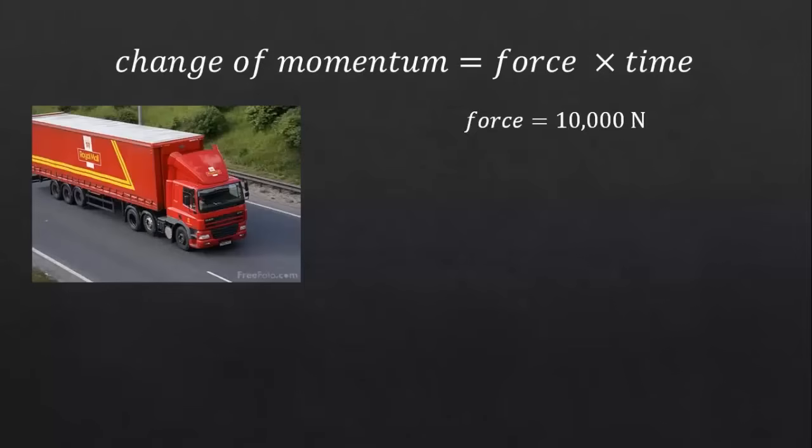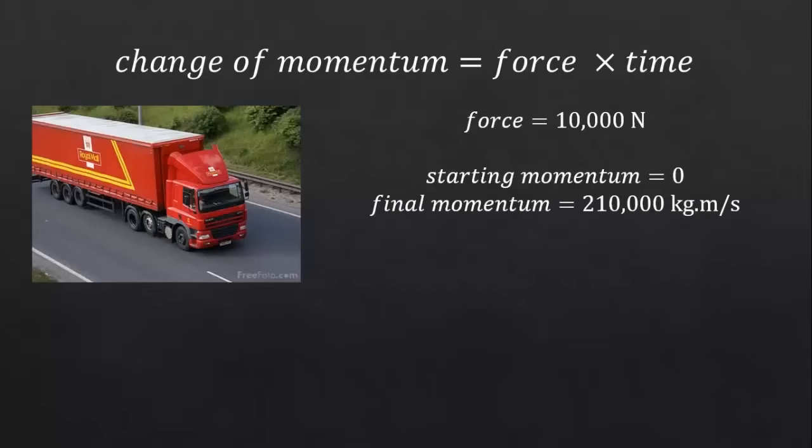First, we need to work out the change of momentum we require. The starting momentum of the lorry is zero. This is because the velocity is zero and momentum equals mass times velocity. The final momentum we calculated earlier was 210,000 kilogram meters per second. Therefore, we need a change of momentum of 210,000 kilogram meters per second.